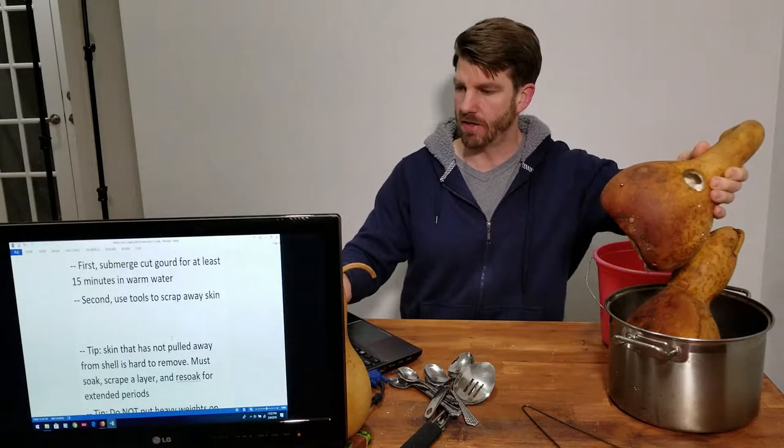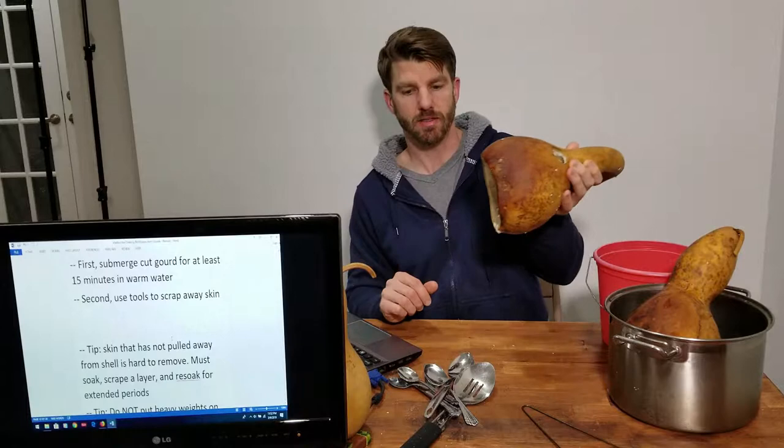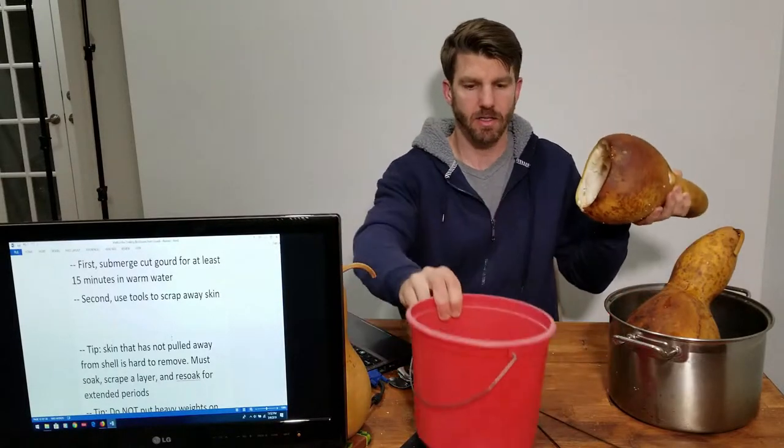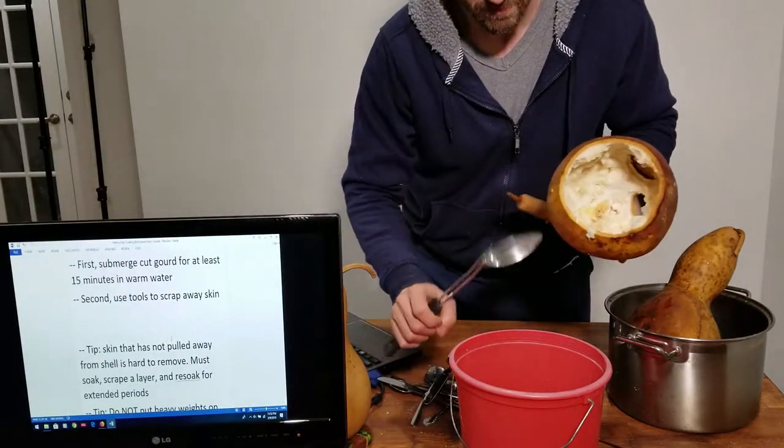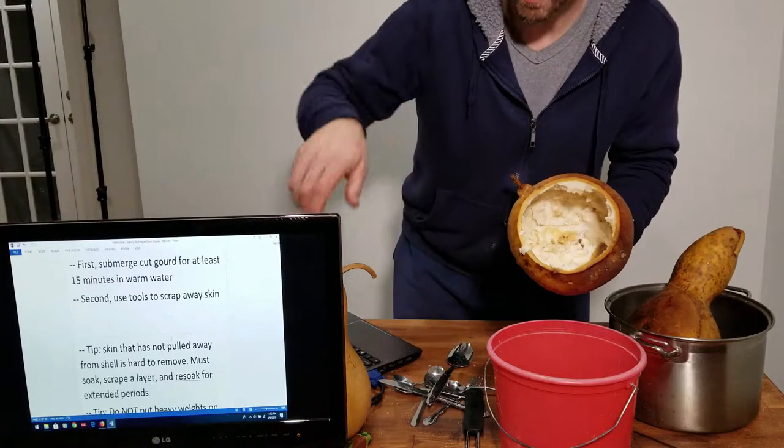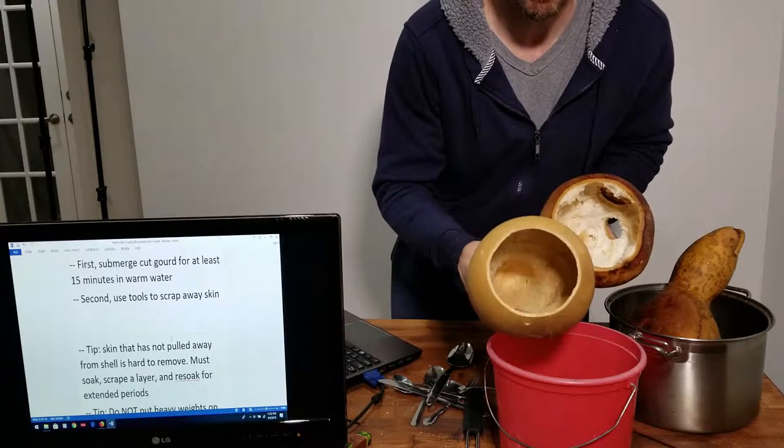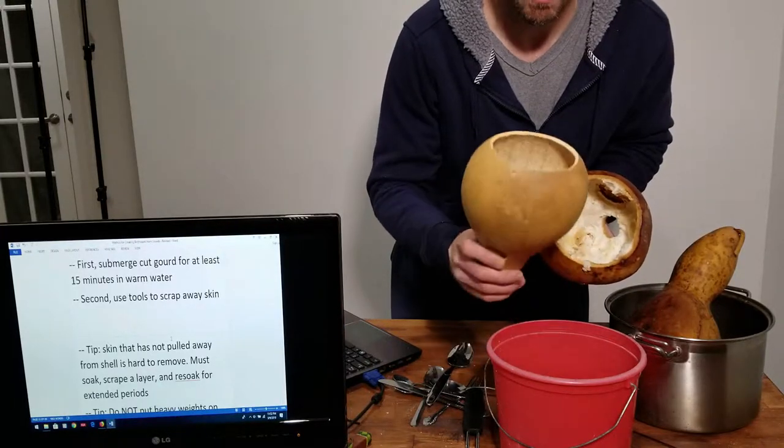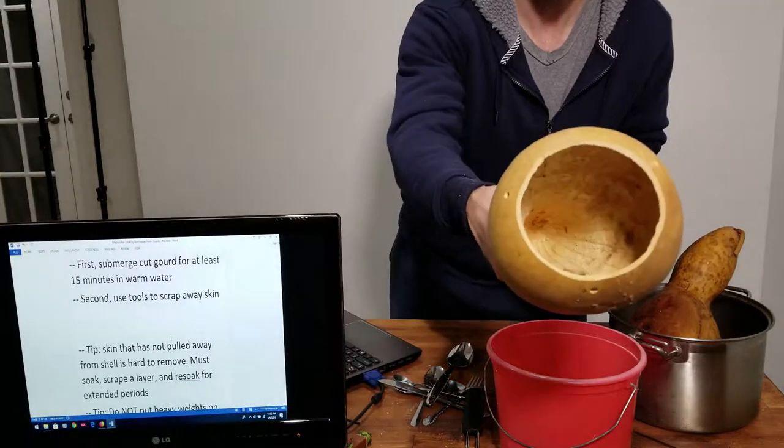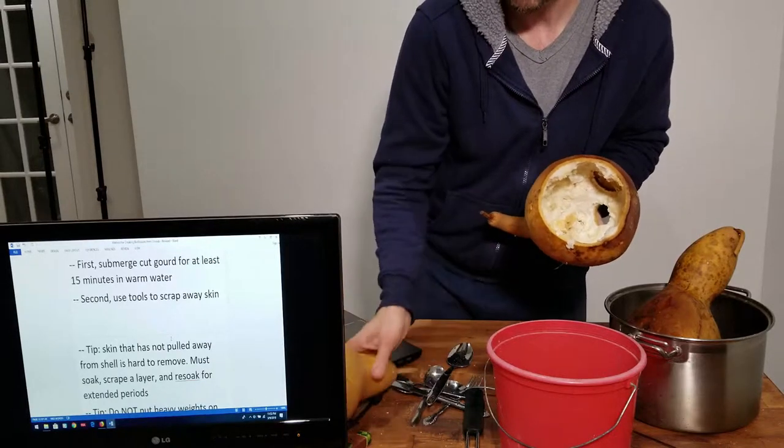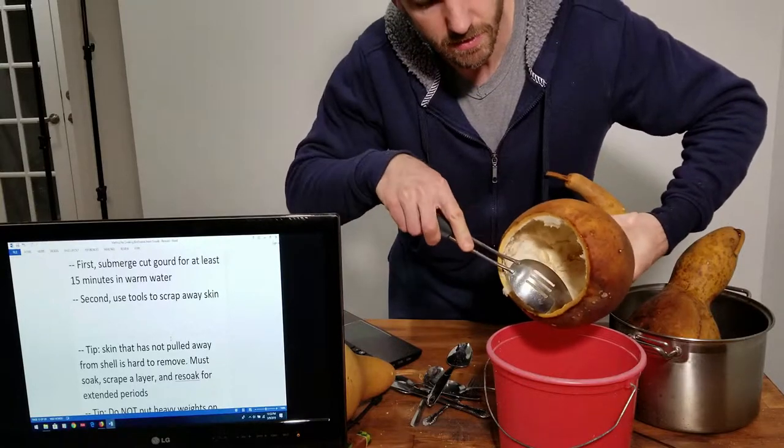In our outline, the second step is to use the tools to scrape away the skin. Our goal is to take something that looks like this and turn it into that with no meat, no flesh of the gourd or any seeds left inside. Just bare shell of the gourd. You can see where it's pulled away a little bit.